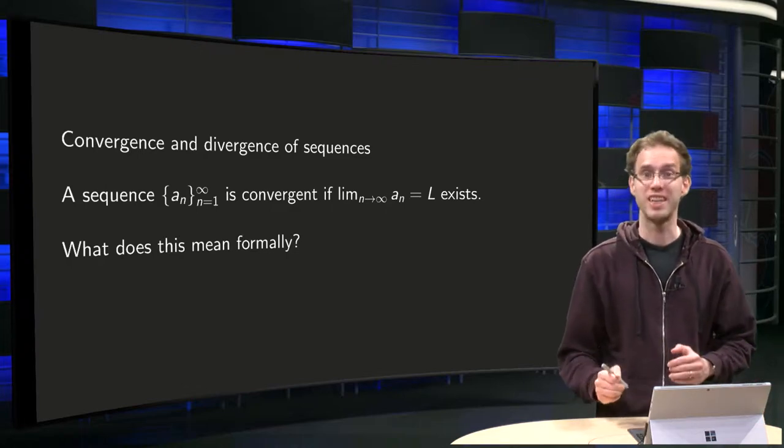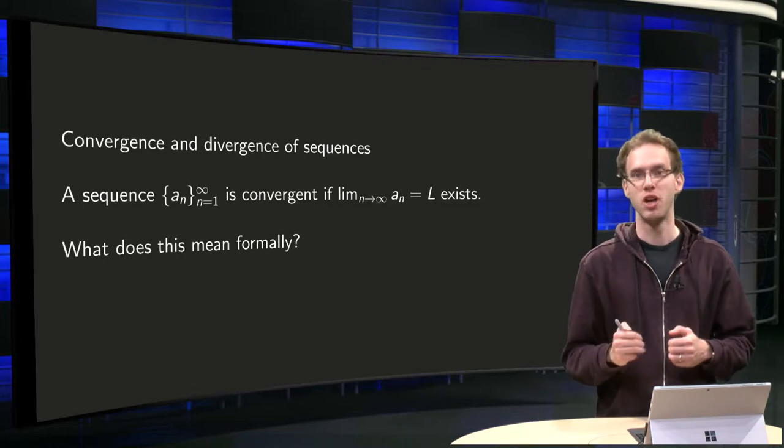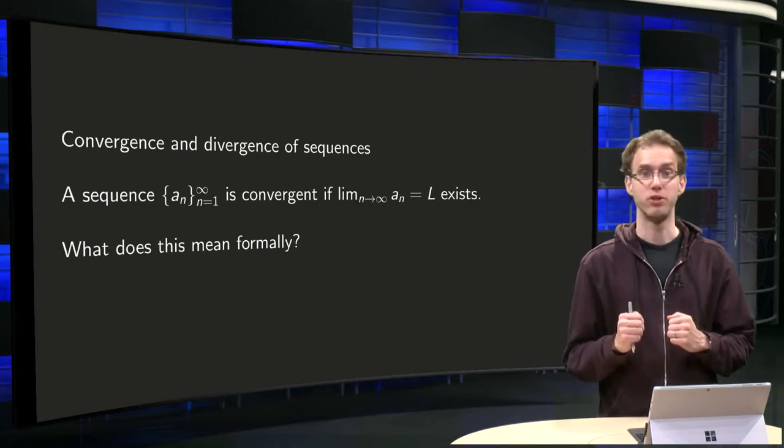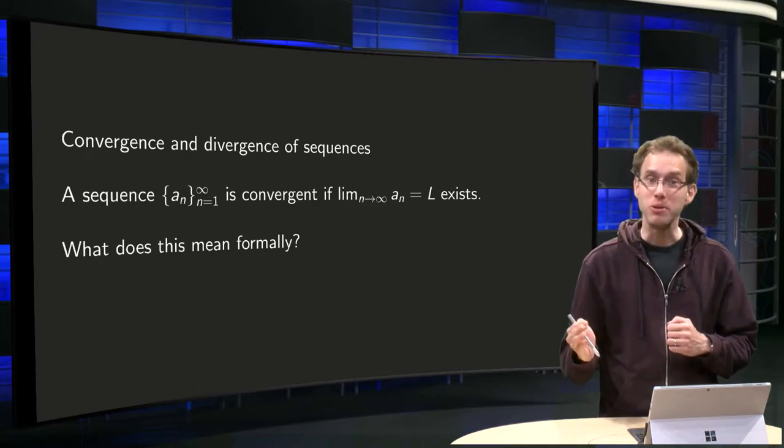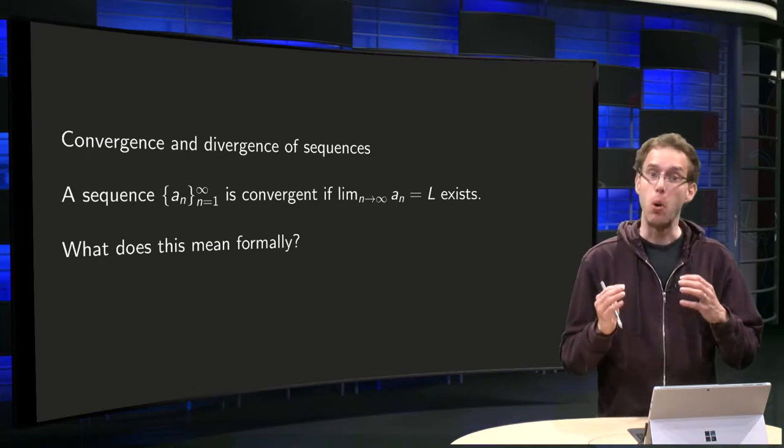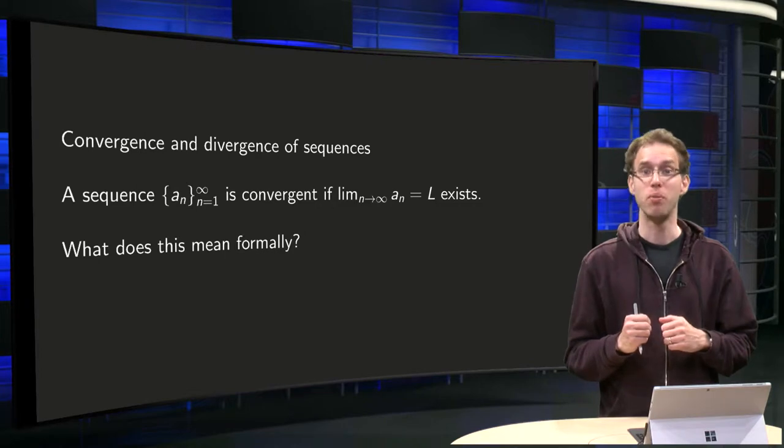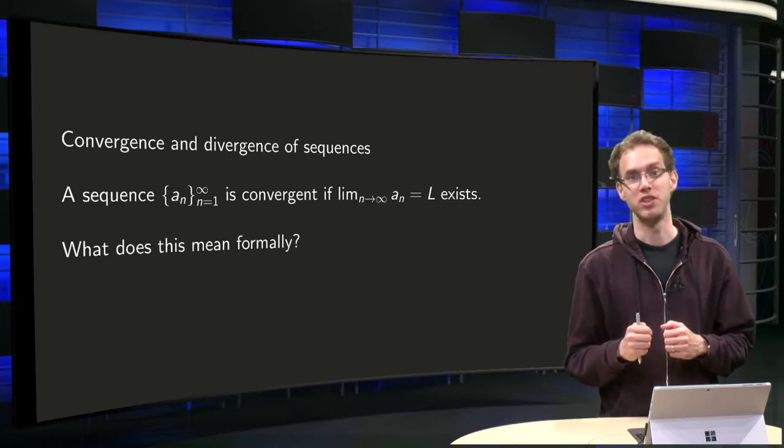Problems with sequences always arise in the tail of the sequence. What happens for large values of n? That will be our first task. How do we distinguish well-behaved sequences from not so well-behaved sequences?